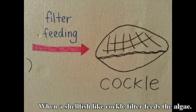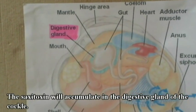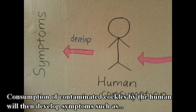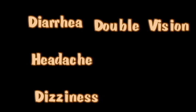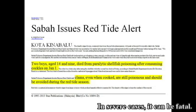When a shellfish like cockles filter-feeds on this algae, the saxitoxin will accumulate in the digestive glands of the cockle. Consumption of contaminated cockles by humans will then develop symptoms such as diarrhea, headache, dizziness, double vision, and paralysis. In severe cases, it can be fatal.